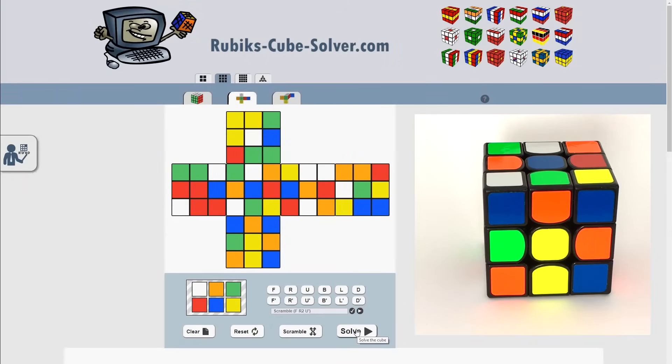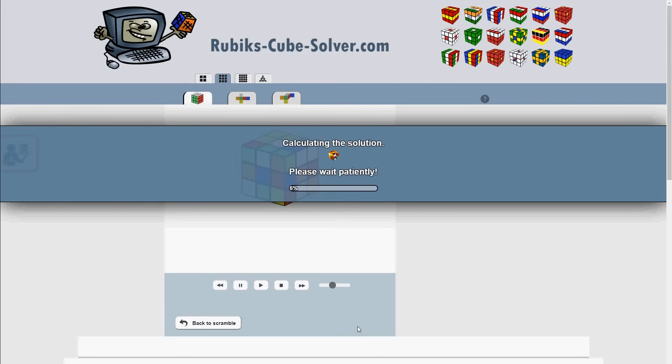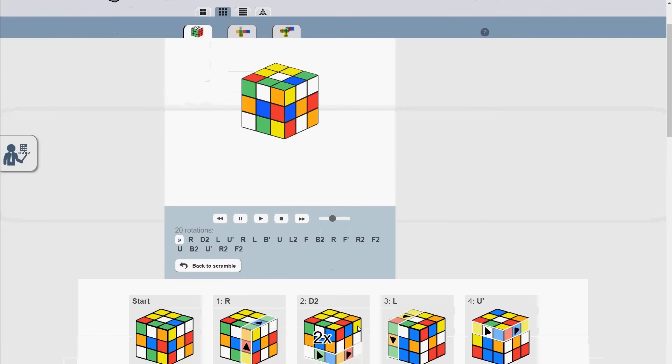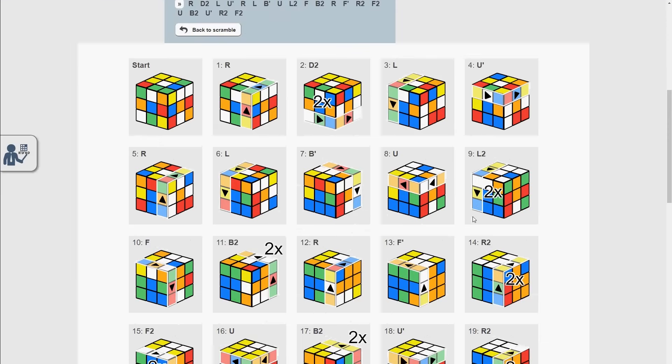Hit the solve button when your scramble is ready and wait for the program to find the solution. This will take you to a new page where you can see the steps needed to solve your puzzle.